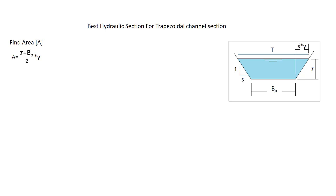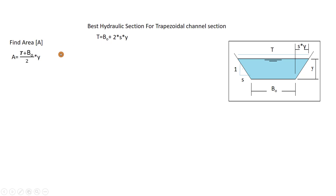Area equals the surface width T plus the bottom width b₀, over 2, multiplied by height y — that is the equation for finding the area of a trapezoidal channel. Now, T equals the surface width, which equals b₀ plus 2sy. Coming back to the area formula by substituting T, we get: (b₀ + 2sy + b₀) / 2 × y.